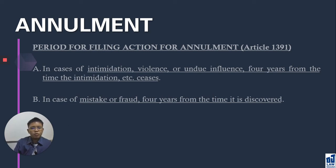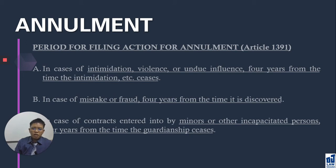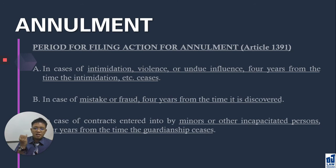In case of contracts entered into by minors or other incapacitated persons, the 4 years is counted from the time the incapacity or guardianship ceases. When the incapacity or guardianship ends, they have 4 years. So in case of a minor, upon reaching legal age at 18 — 19, 20, 21, up to 22 years old (exclude the first, include the last) — they have 4 years to file an action for annulment.